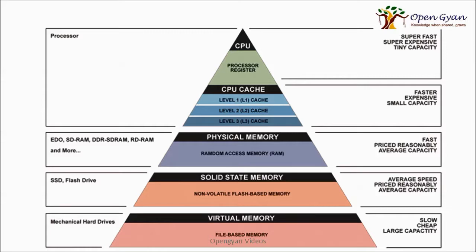Virtual memory is a file-based memory related to the mechanical hard disk. It is slow and cheap, but very large in capacity, and can store data for future use. So the hierarchy goes from the fastest to the slowest, and from the smallest to the largest.